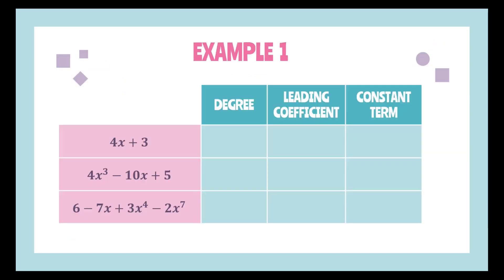Let's look at example 1. For the polynomial 4x plus 3, the degree is 1, since that is the highest power of x. The leading coefficient is 4, which multiplies the highest power of x, and the constant term is 3. For 4x cubed minus 10x plus 5, the degree is 3, the leading coefficient is 4, and the constant term is 5.